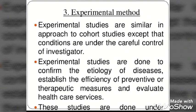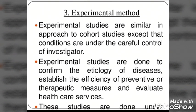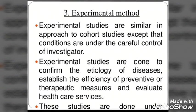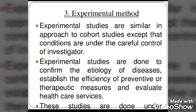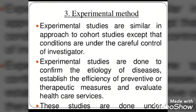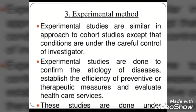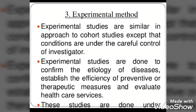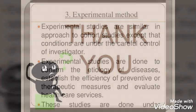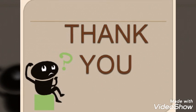The next type is the experimental method. Experimental studies are similar in approach to cohort studies, except that conditions are under the careful control of the investigator. They are done to confirm the etiology of diseases, establish the efficiency of preventive or therapeutic measures, and evaluate healthcare services. The epidemiologist investigates the health of the people to know the exact cause of disease and help with treatment or control.